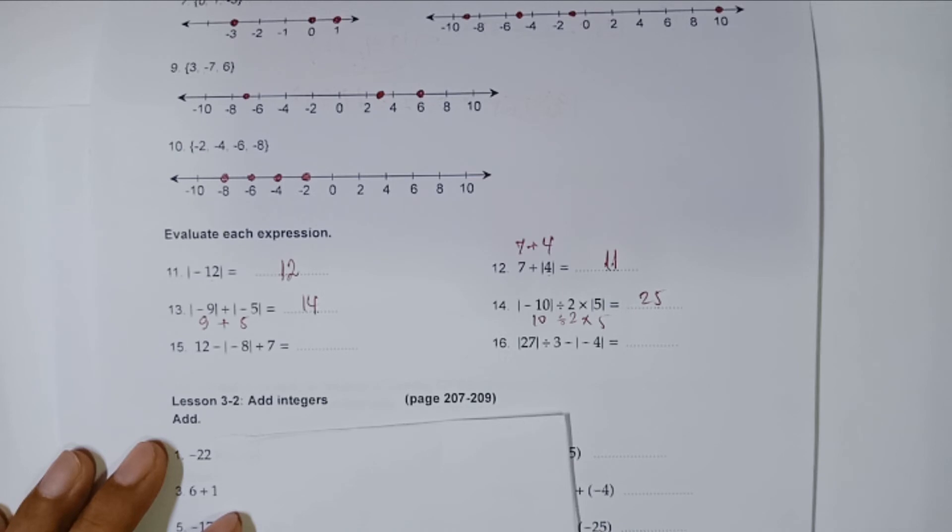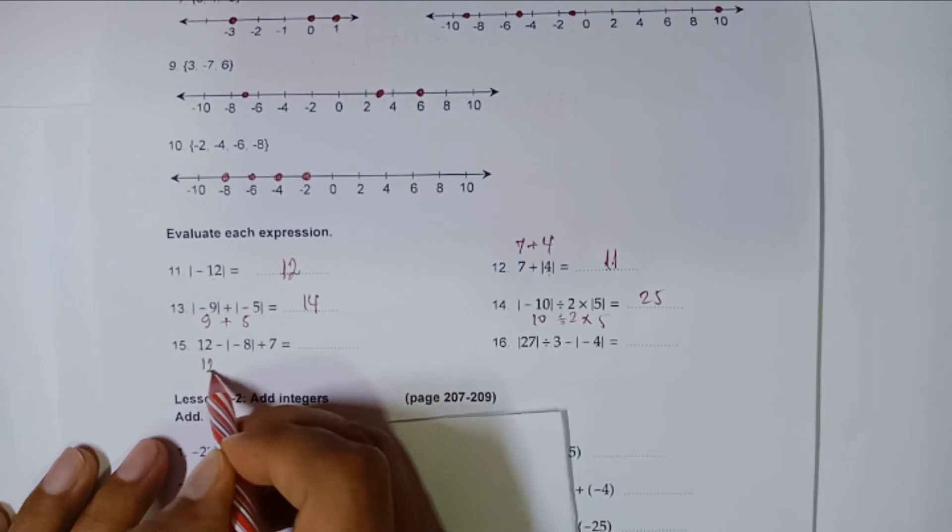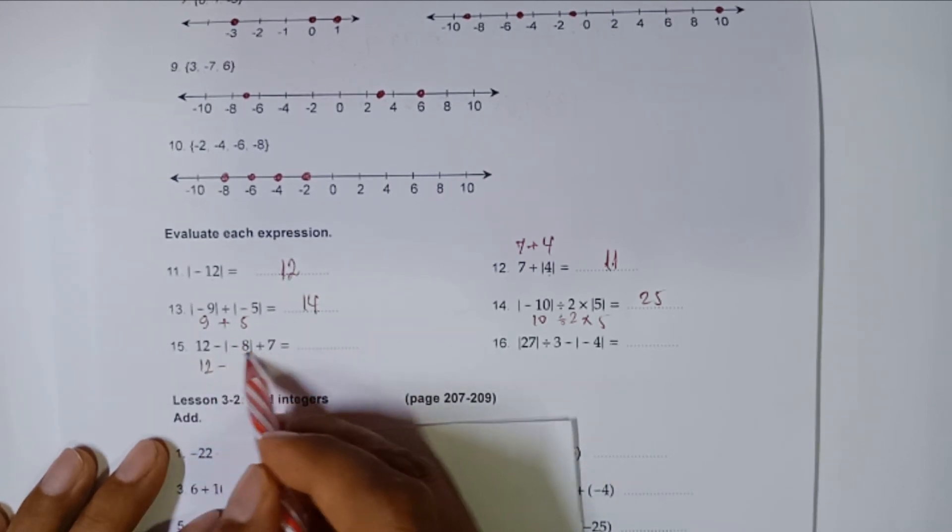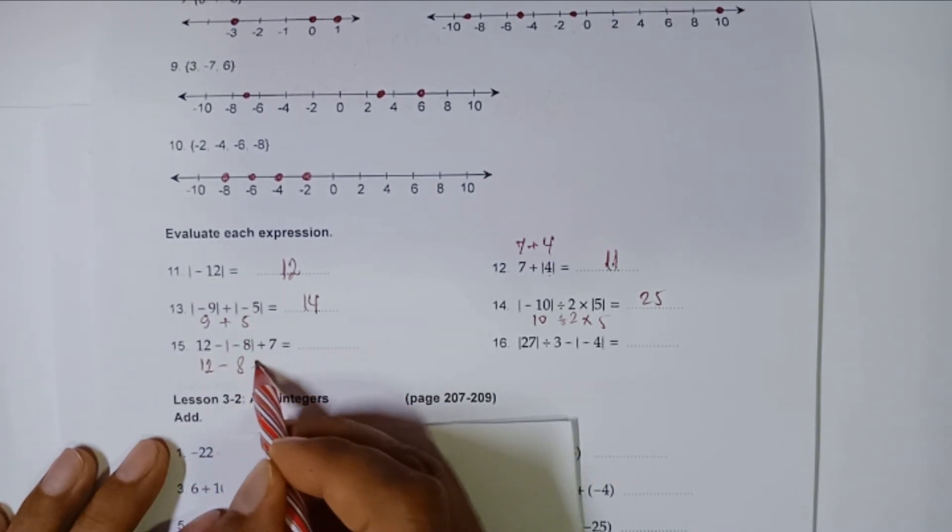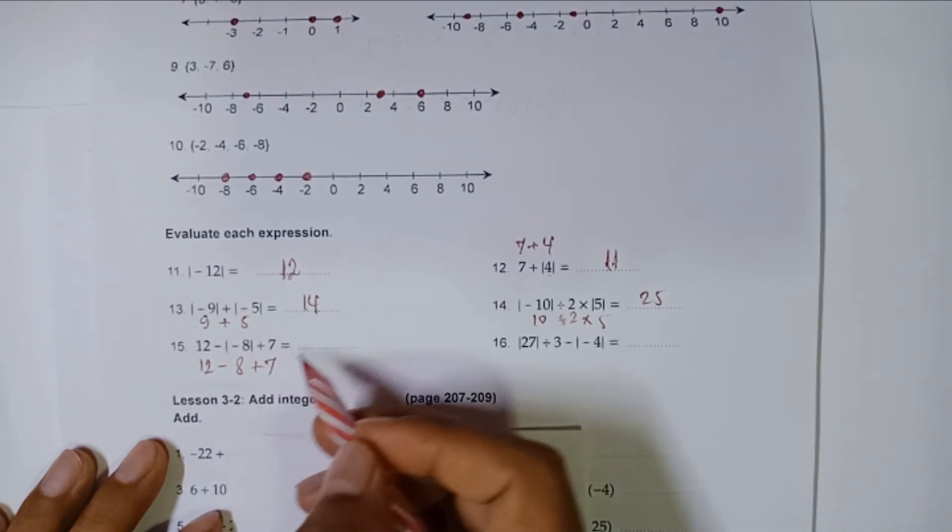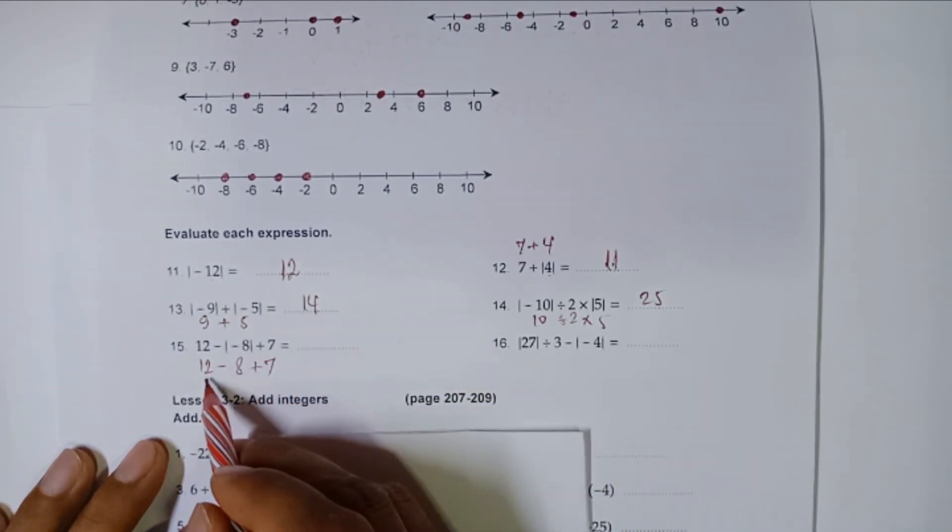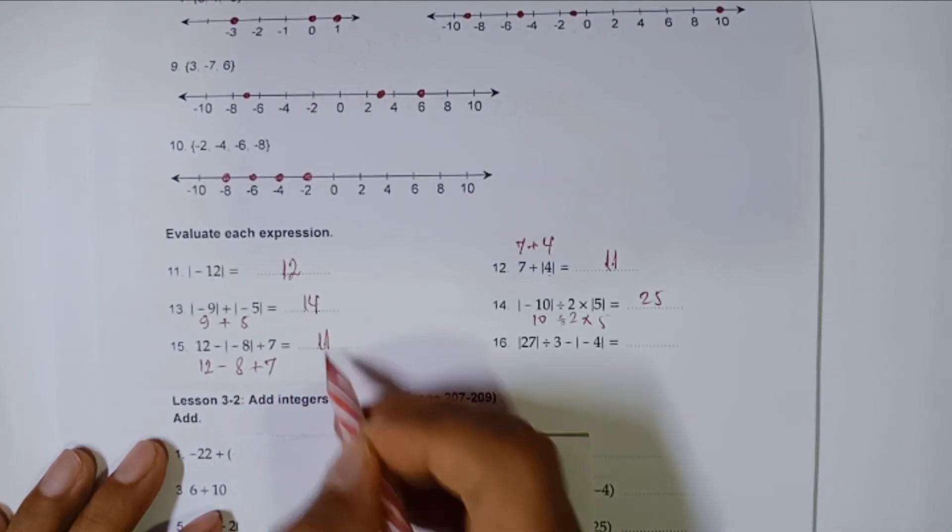Let's move on to number fifteen. Twelve minus this negative eight, it becomes eight, and plus seven. So twelve plus seven is nineteen, nineteen minus eight is eleven.